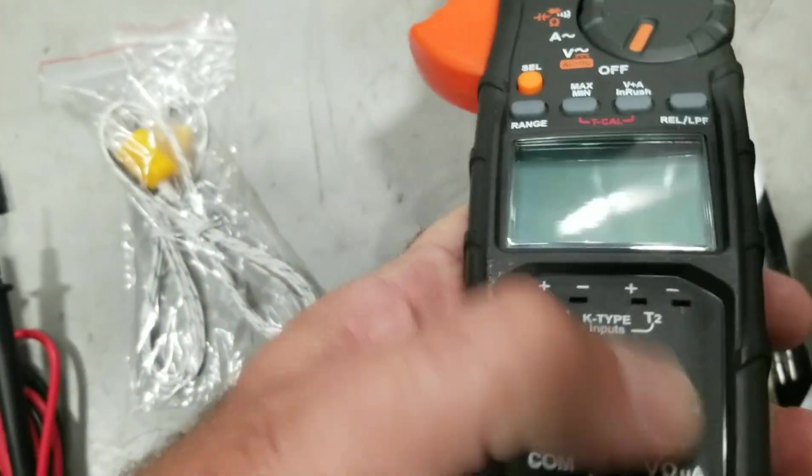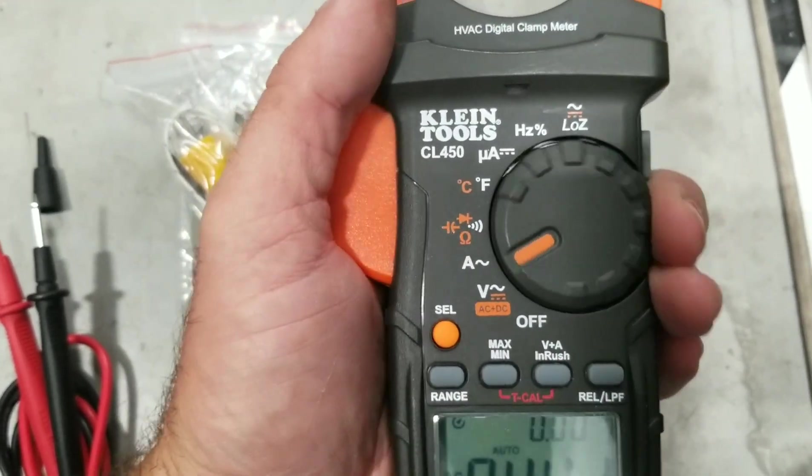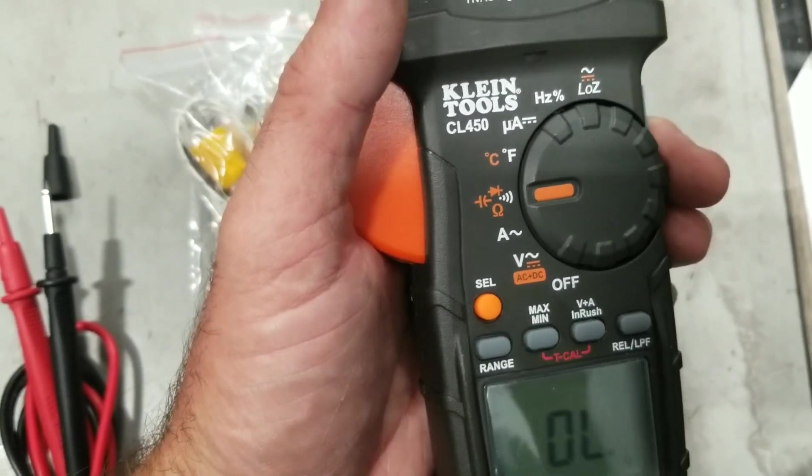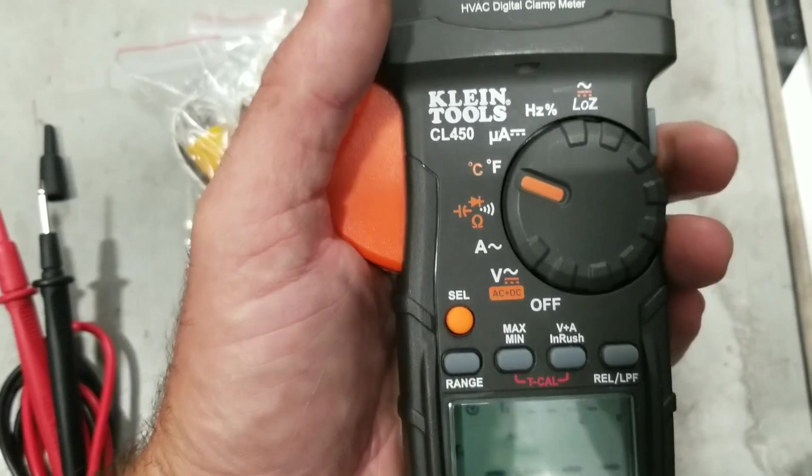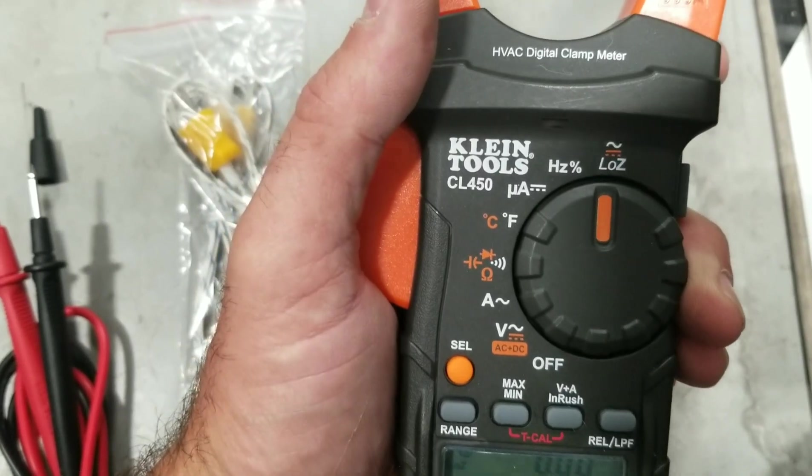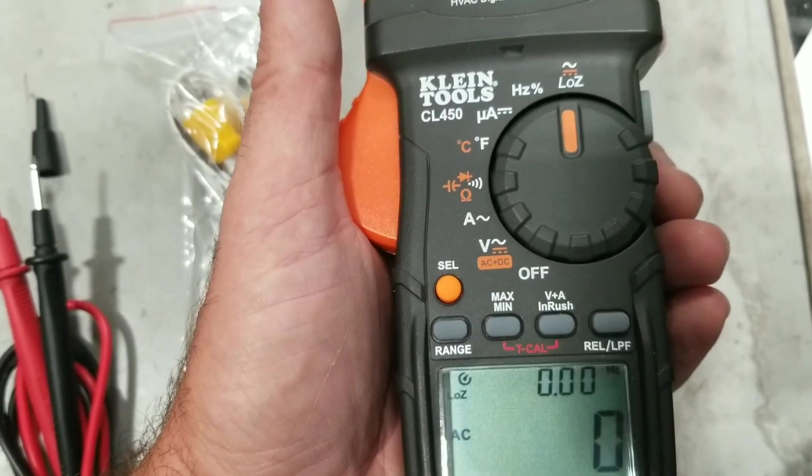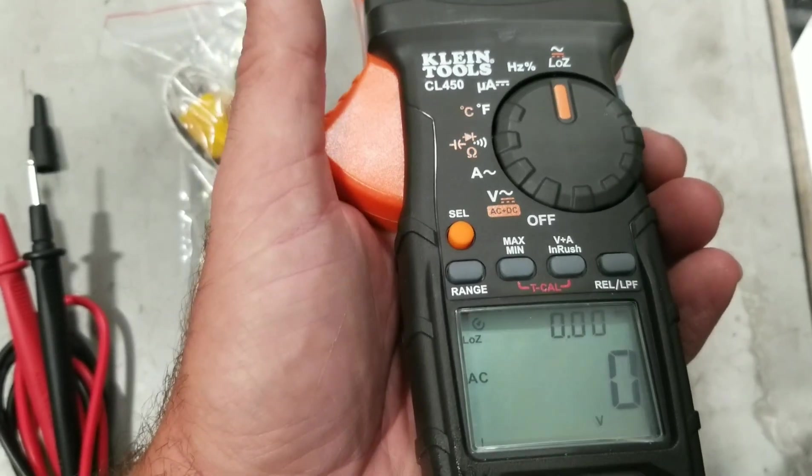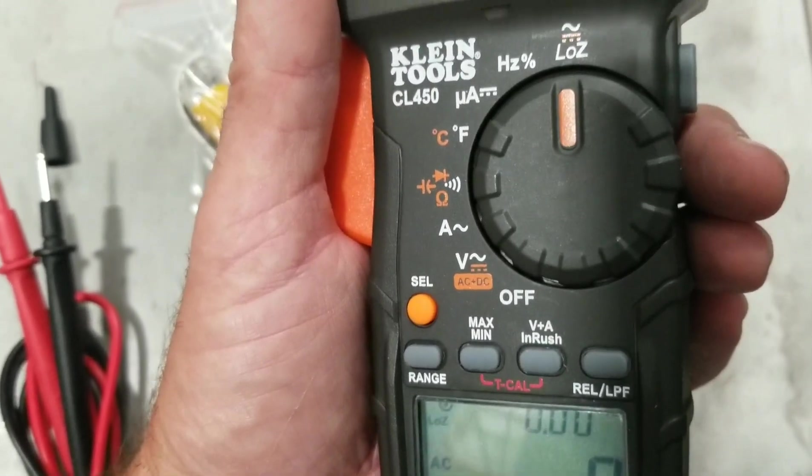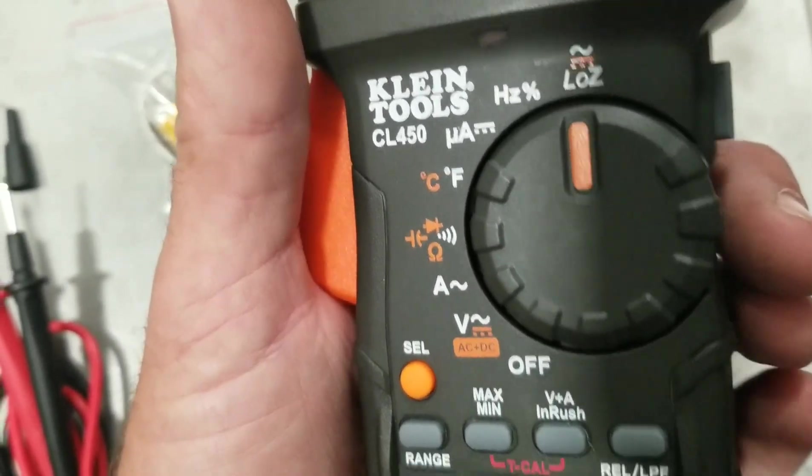Now, this meter has most of the functions that a regular meter has, voltage, AC, DC, amperage. We have the capacitance and resistance, temperature, microamps. We have frequency, and an added feature of this meter, which I like, is the low Z. This is for checking low impedance circuits to check for the presence of ghost voltage. Ghost voltage is a pretty interesting subject if you guys want to learn more about that. There's a lot of articles online about ghost voltage and how to use the low Z setting on your meter.